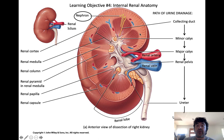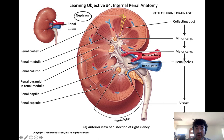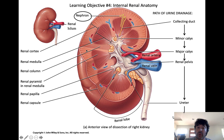Looking at the anatomy of the kidney: this outermost dense connective tissue structure that stabilizes the soft internal regions is called the renal capsule. The functional tissue of the kidney is split into two discrete regions. The outermost region, which stains a little lighter due to the type of tissue found there, is called the renal cortex.